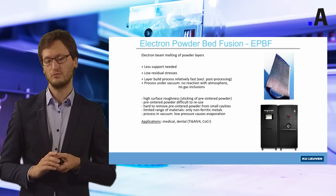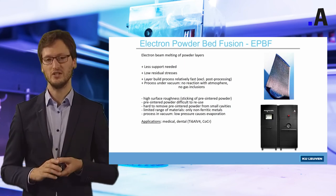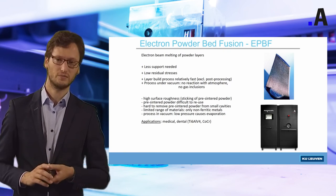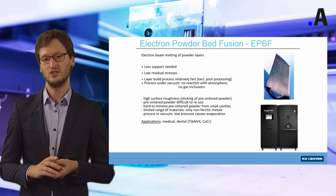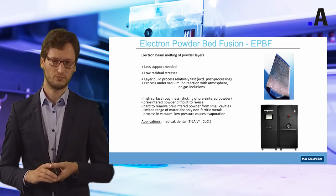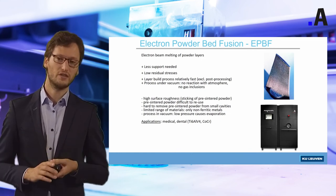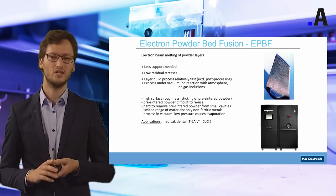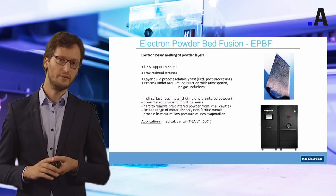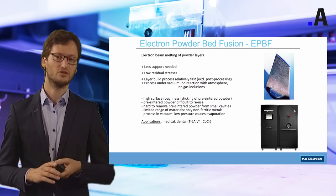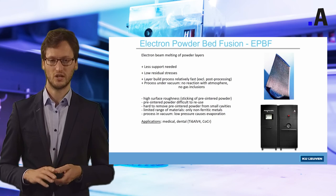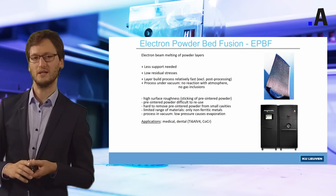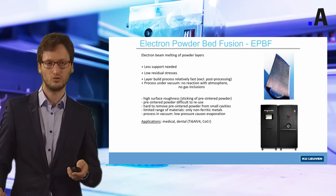To summarize: less support structure is needed, residual stresses are lower, the layer build process is relatively fast, and an additional advantage is that processing is done under vacuum. Disadvantages include high surface roughness, difficulty reusing the powder, and a limited range of available materials. In practice, EBM is mostly used for medical and dental applications in titanium or cobalt-chromium.